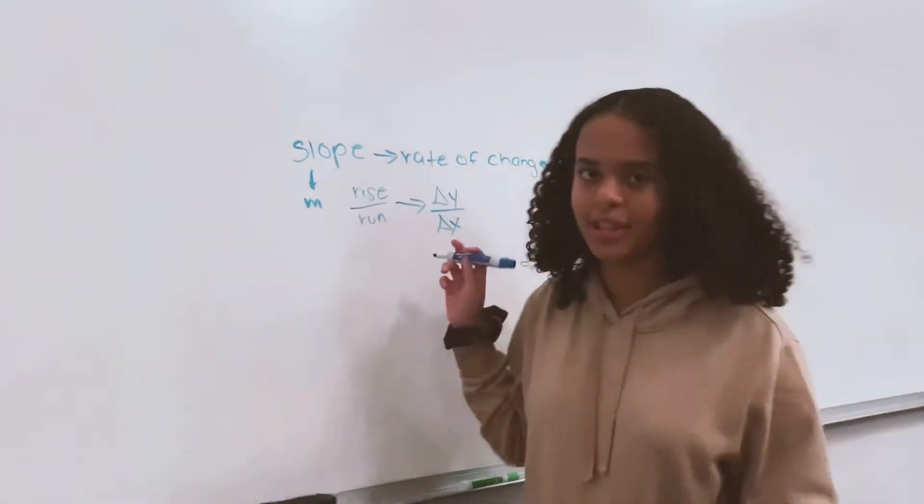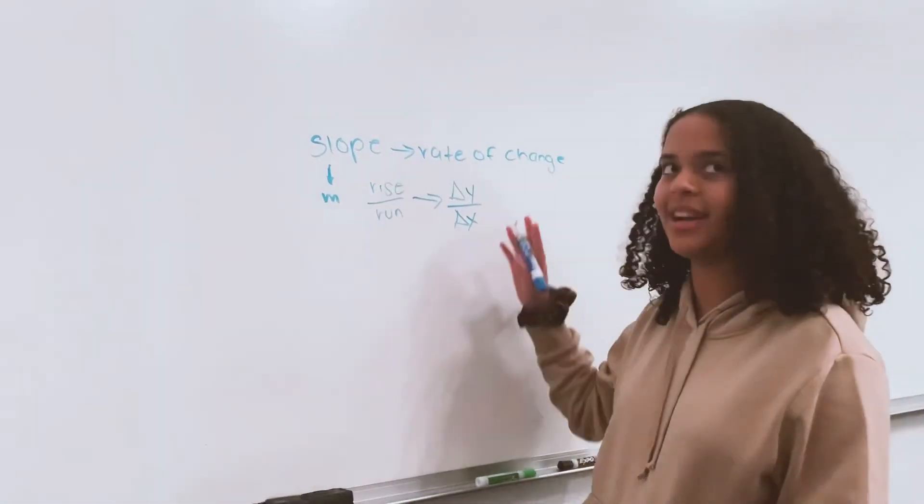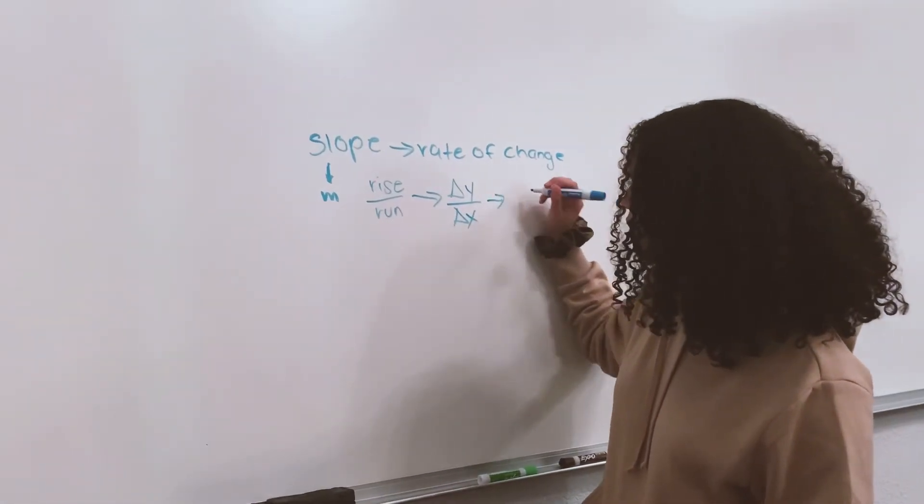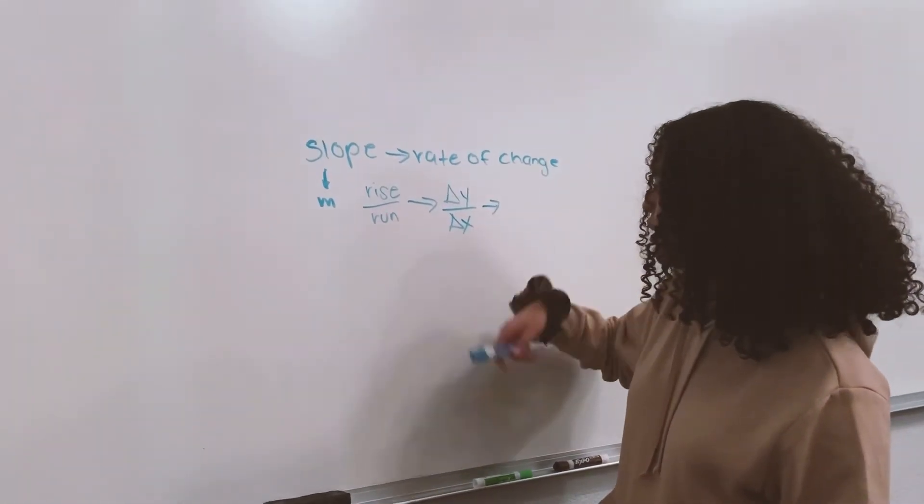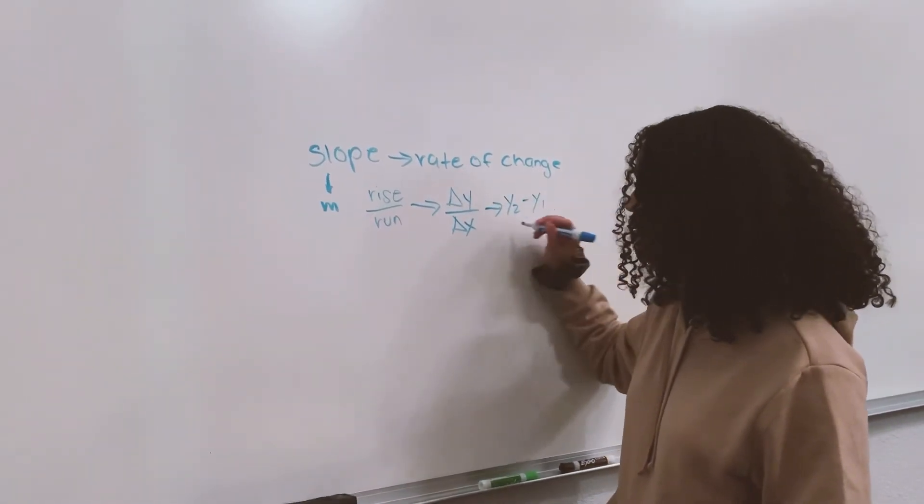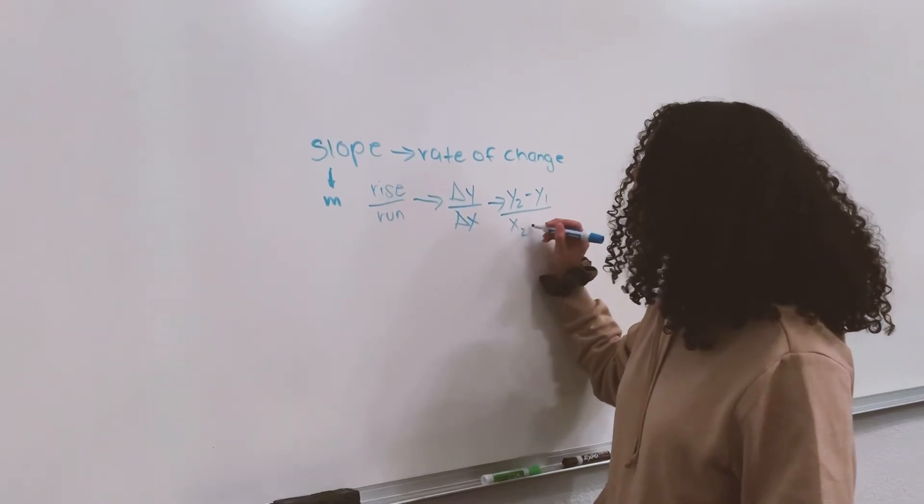Delta means change in, so that would also be change in y over change in x. And when you're changing something, you subtract, so it would be y2 minus y1 over x2 minus x1.